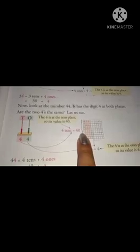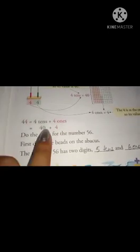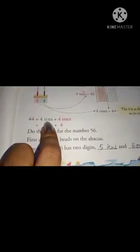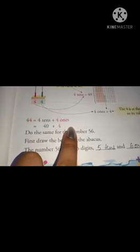So, the tens is in place. The place value is 40. And the ones place is only 4. So, how will we write this 44? 44 is equal to 4 tens plus 4 ones. That means 40 plus 4.